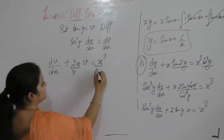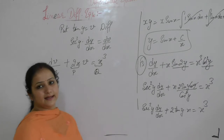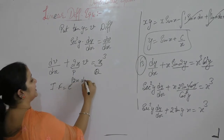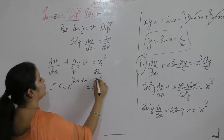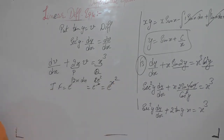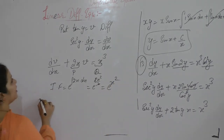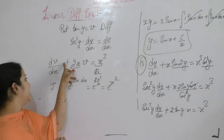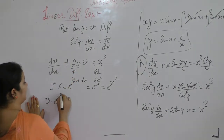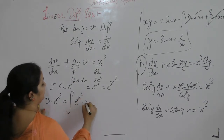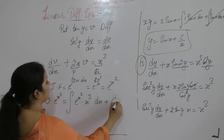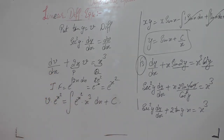This is now a linear differential equation with p = 2x and q = x³. The integrating factor is e^(∫2x dx) = e^(x²). So v · e^(x²) = integral of x³ · e^(x²) dx plus c. Now put x² = t, so 2x dx = dt, and x³ = x · x² = t · (dt/2). So integral of t · e^t · dt/2.